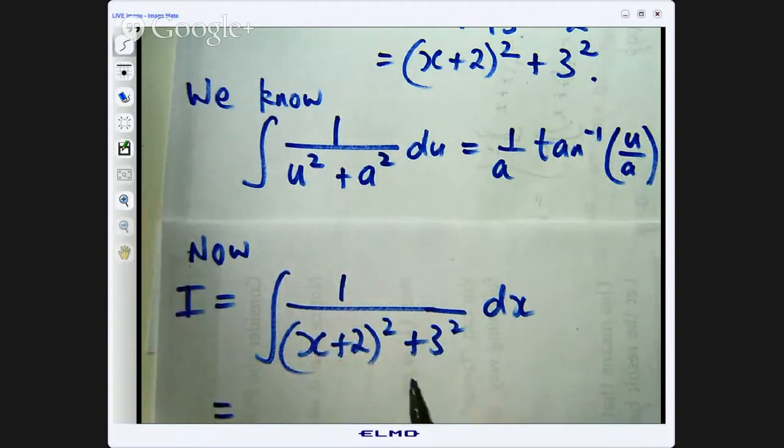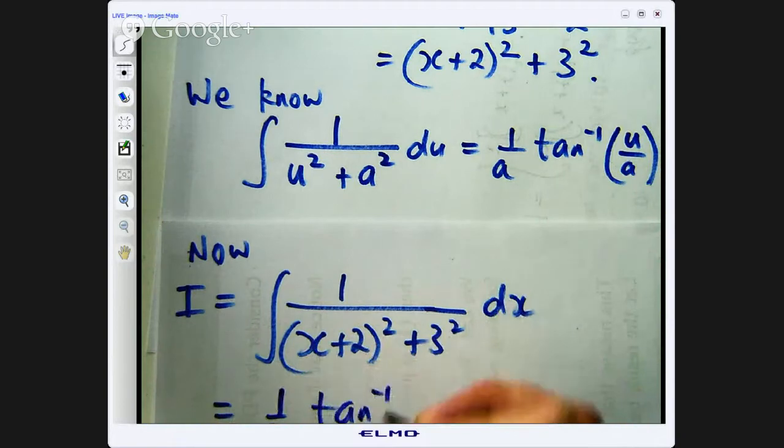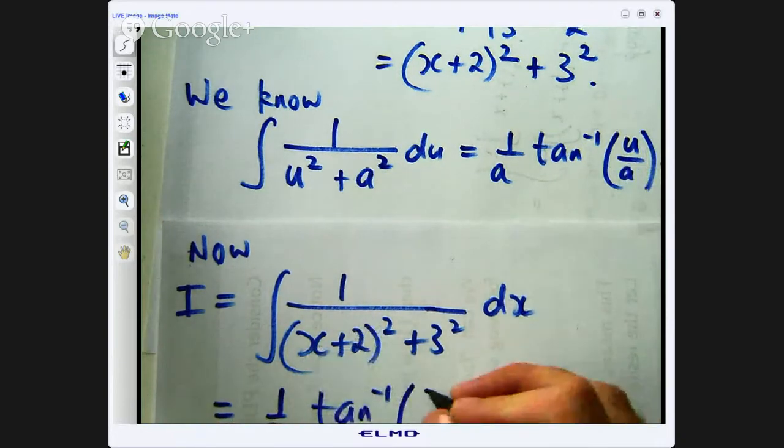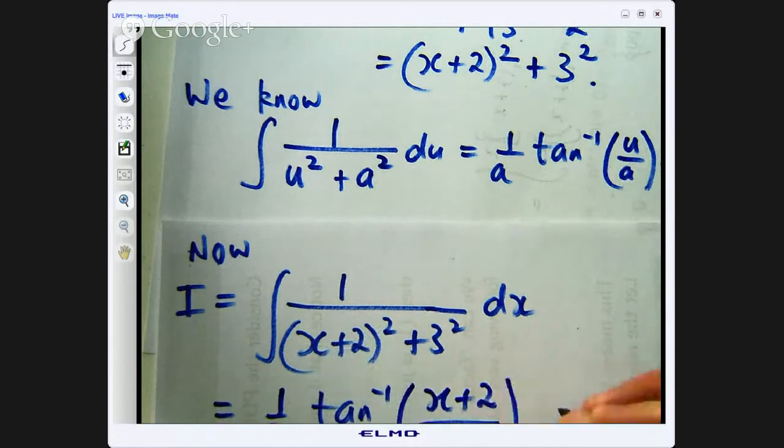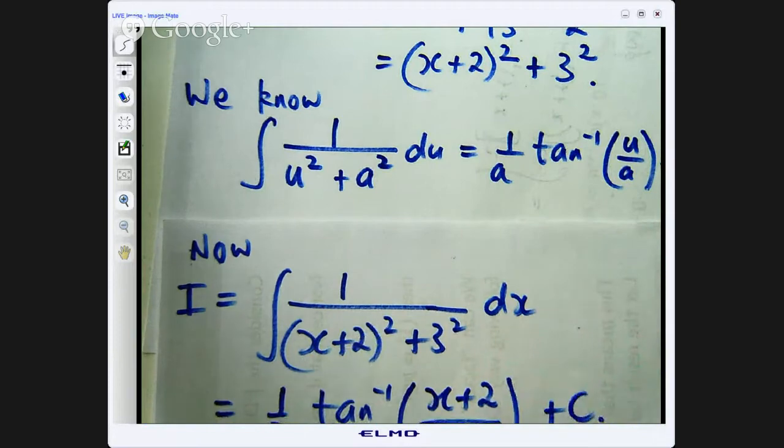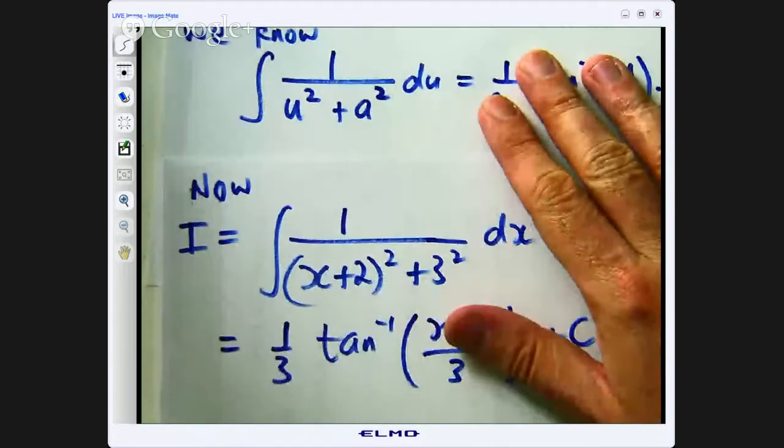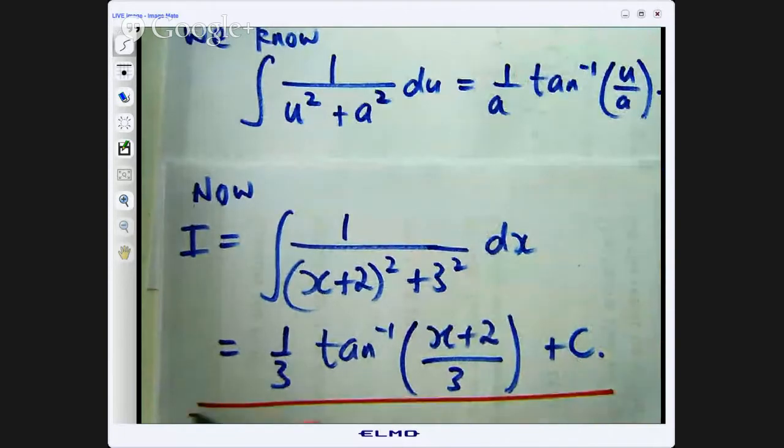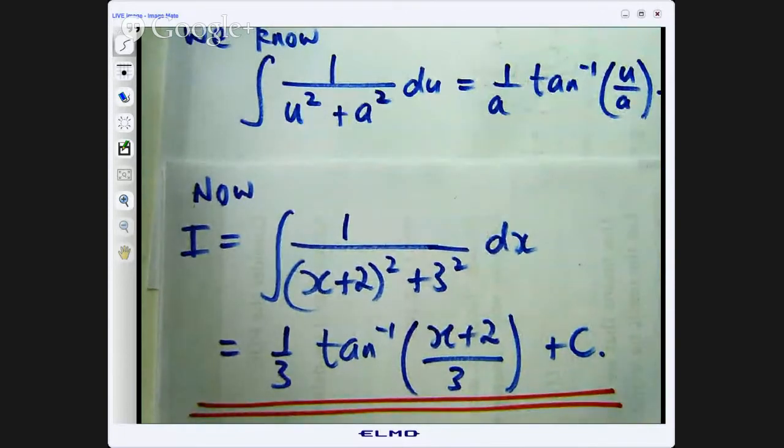So we are going to get 1 on 3 tan inverse u on a. So if u equals x plus 2 it will be x plus 2 all over a which is 3 plus a constant. So this then is the inverse tan function that I was talking about.